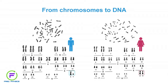Now we understand how to distinguish male and female samples. But the question is: how can we distinguish samples from different females or from different males? We cannot use the chromosomes method — chromosomes look really similar within females or within males. So we need to go deeper, down to the molecular level.